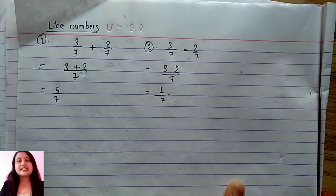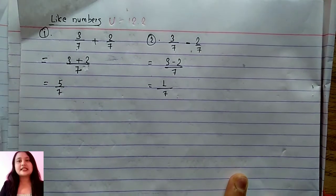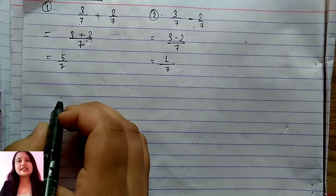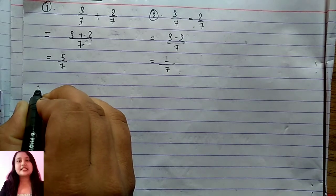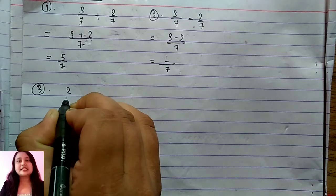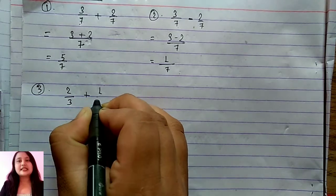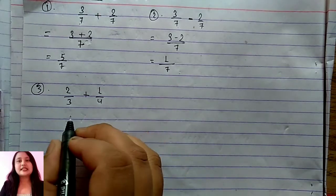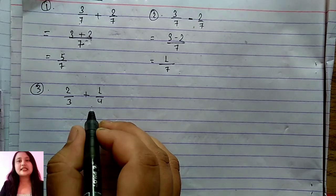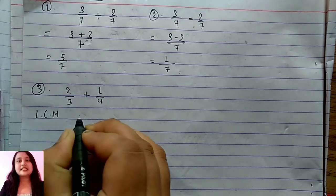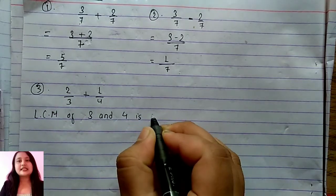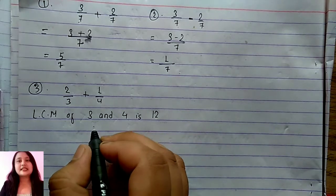But what if the question asks you about fractions having different denominators? Let's take an example from question number 3 where there is the addition: 2 by 3 plus 1 by 4. Here different denominators are there. Since the denominators are different, we need to take the LCM. The LCM of 3 and 4 is 12.